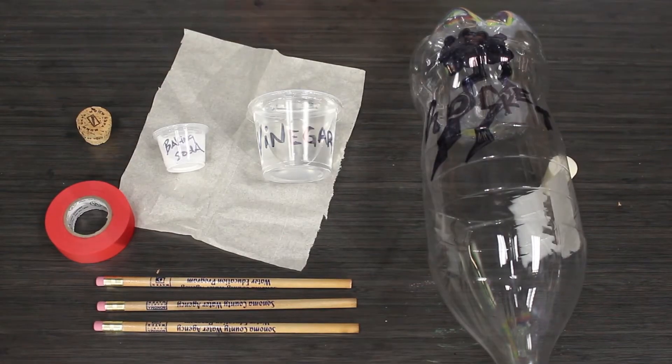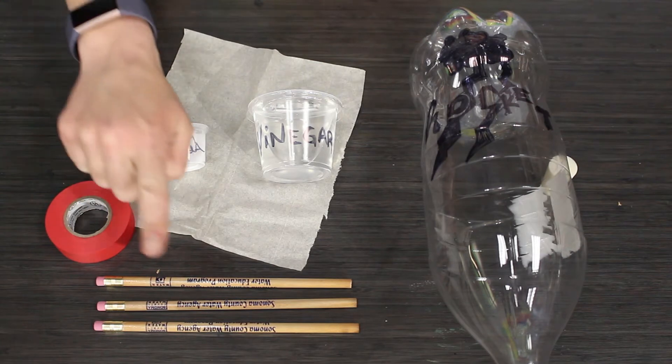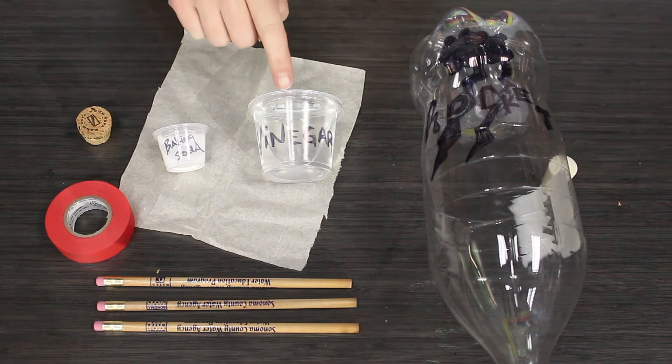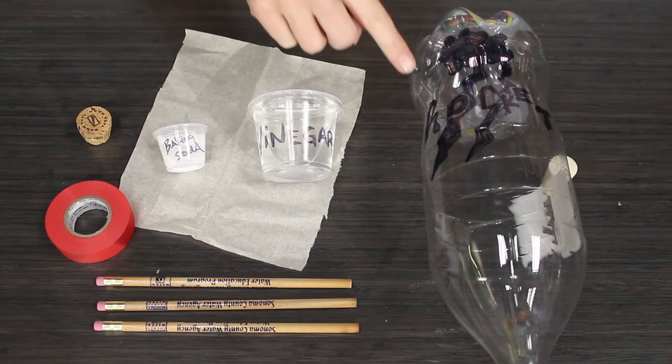The materials that we will need today: a cork, some tape, three pencils, some baking soda, some vinegar, a paper towel square, and a two liter bottle.